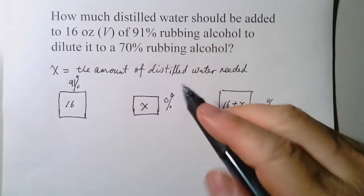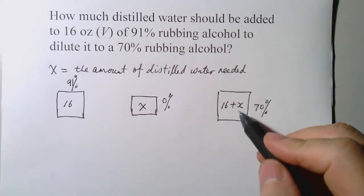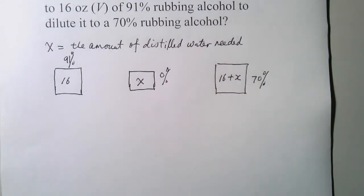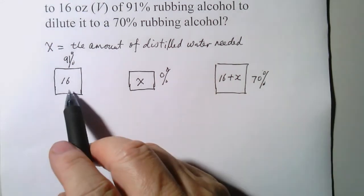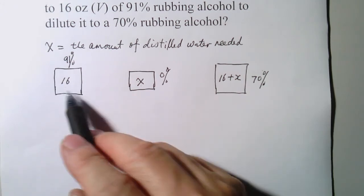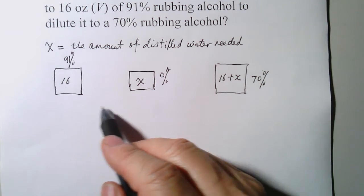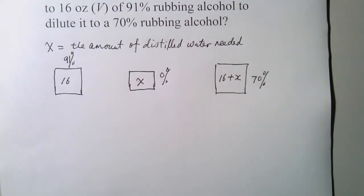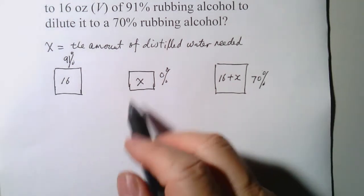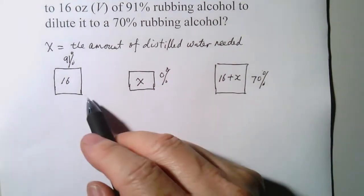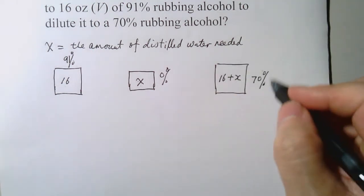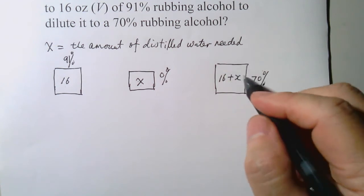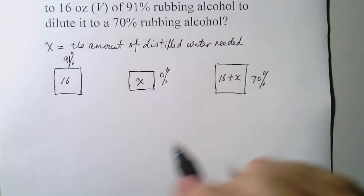The volume of the 70% rubbing alcohol is going to be 16 plus x. To solve this problem, we need the following principle: before mixing, the total amount of pure alcohol in the solutions should be the same as the amount of alcohol in the diluted 70% rubbing alcohol after mixing.